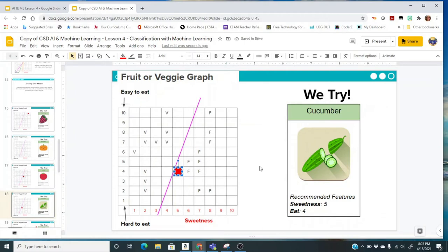So for me, my model classifies it as a fruit. What about your model? Where does it classify it? And a cucumber is technically a fruit because it has seeds. So our model did get it right, or at least mine did.